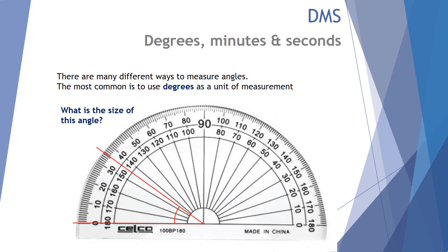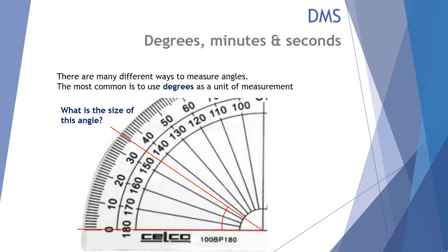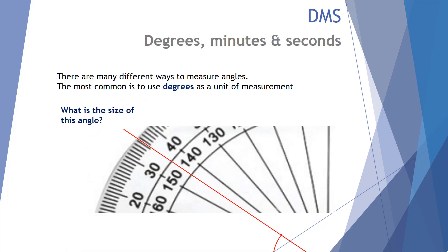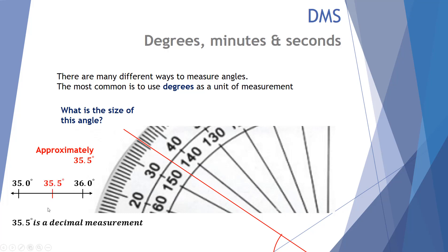What would you say the size of this angle is? It looks to be somewhere between 30 and 40 at a quick glance. If we blew it up a little bit bigger, some might say it's pretty close to 35. And if we blew it up even more, we can see it's pretty much between 35 and 36 — approximately 35 and a half, give or take. On a scale from 35 to 36 degrees, 35.5 is right in the middle. 35.5 is an example of a decimal measurement.